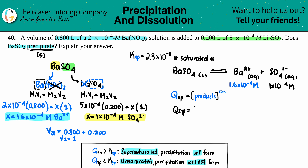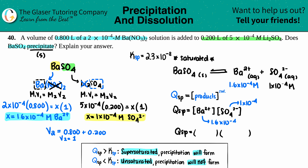Qsp = [Ba²⁺][SO₄²⁻] = (1.6×10⁻⁴)(1×10⁻⁴) = 1.6×10⁻⁸.